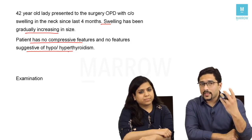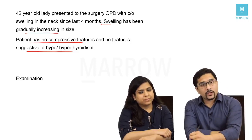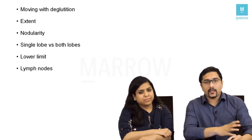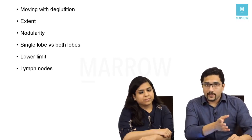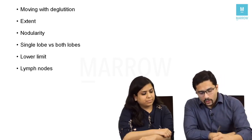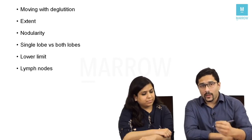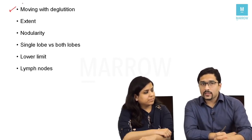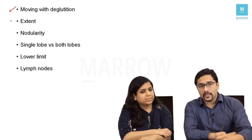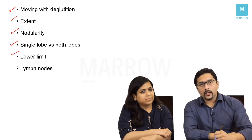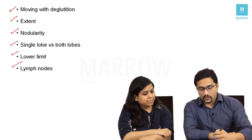We now move on to examination of a thyroid swelling, which was also asked in the AIIMS exam. The important points — and the list is quite long — include movement during deglutition, the extent, nodularity, single lobe versus both lobe enlargement, the lower limit, and whether lymph nodes are present or not.